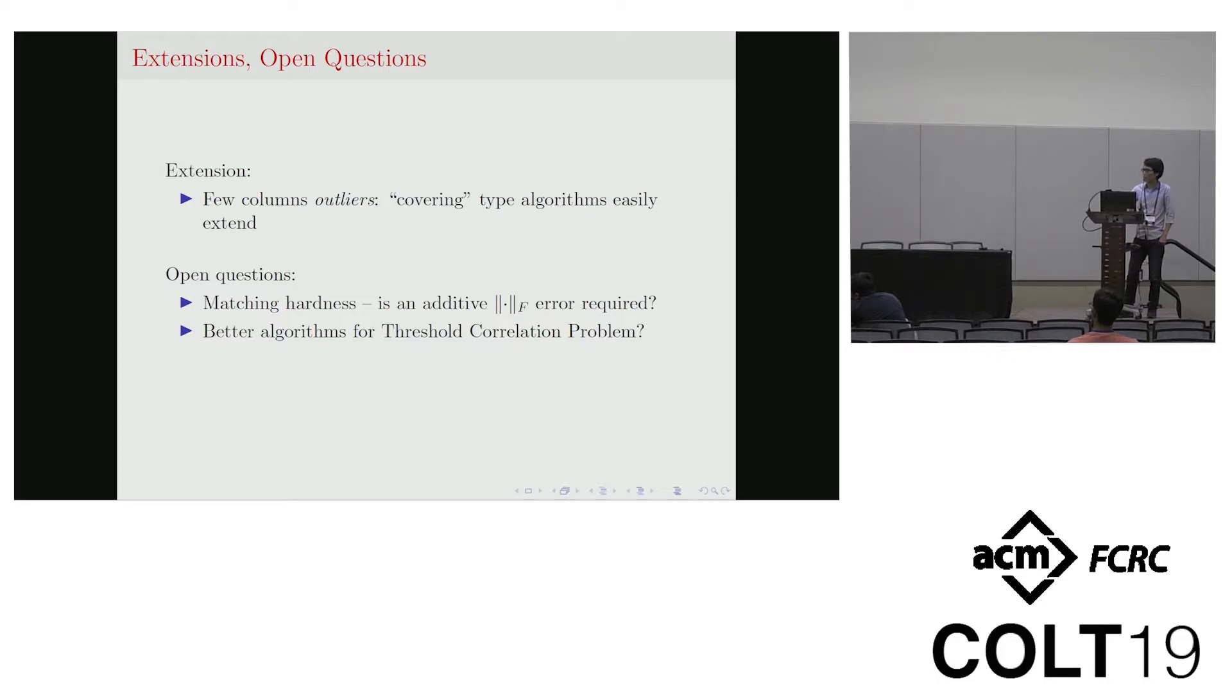And here are some open questions we would like to introduce here. Can we do better than this additive error result? Can we find a lower bound hardness result that this additive error is necessary? And the next one is, as I mentioned before, we introduce this threshold correlation problem - is there a better algorithm to find, to solve this or to approximate this threshold correlation problem?